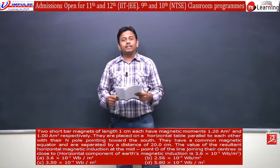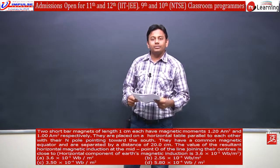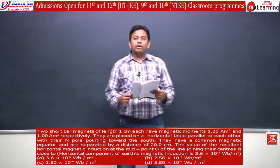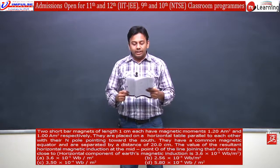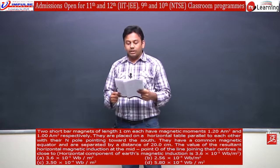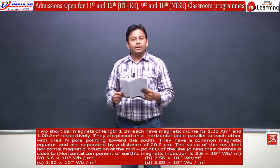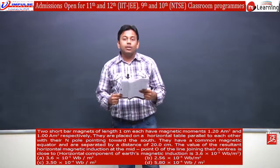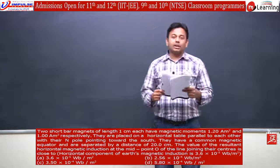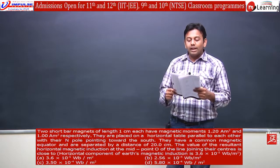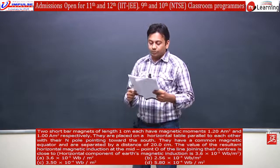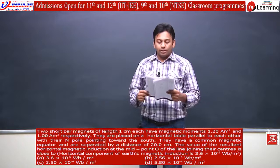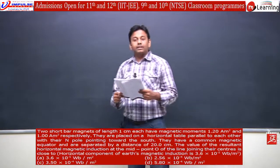I am taking up a question on magnetism from the IIT JEE Mains 2013 paper. The question is as follows: Two short bar magnets of length 1 centimeter each have magnetic moments 1.20 ampere meter square and 1.00 ampere meter square respectively. They are placed on a horizontal table parallel to each other with their north poles pointing towards the south. They have a common magnetic equator and are separated by a distance of 20.0 centimeters. The value of the resultant magnetic induction at the midpoint O of the line joining their centers is close to?